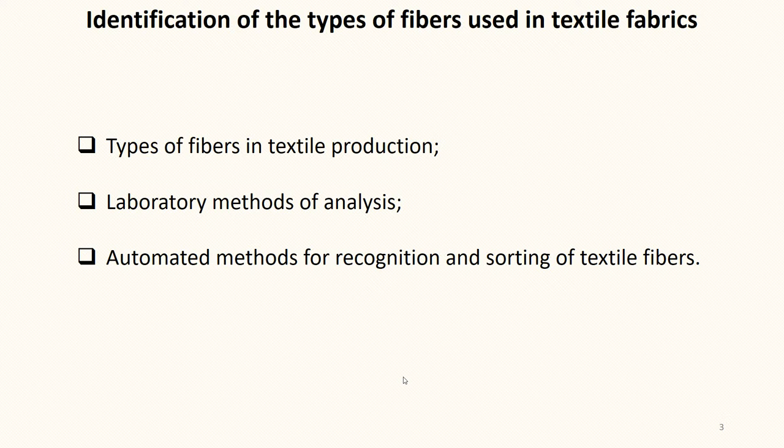Classical laboratory methods for determining what fibers are used in textile fabrics include dissolution, morphological differences, differential colorimetry, thermogravimetry, and gas chromatography. Laboratory methods offer sufficient accuracy, but have the main disadvantage that they are time-consuming and sample preparation is required. They are not suitable for use in automated systems for sorting and recycling textile products.